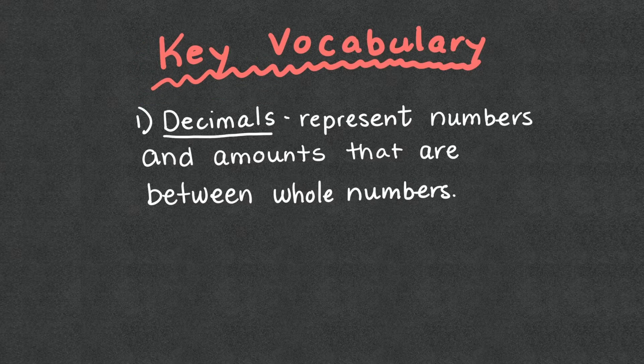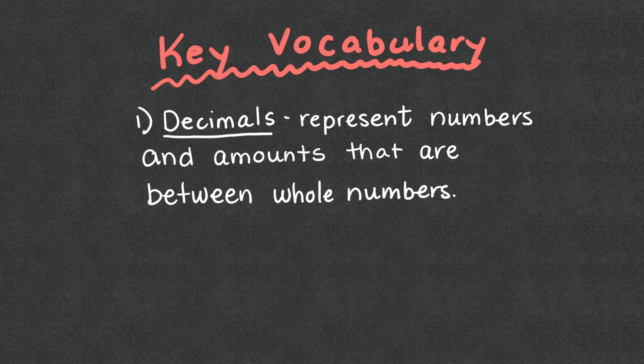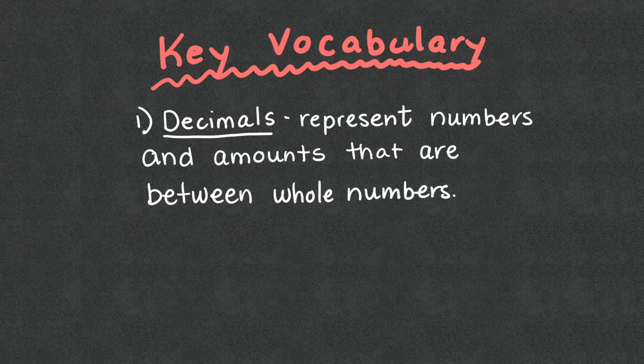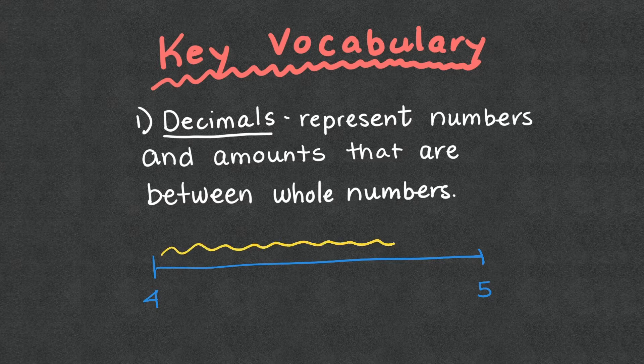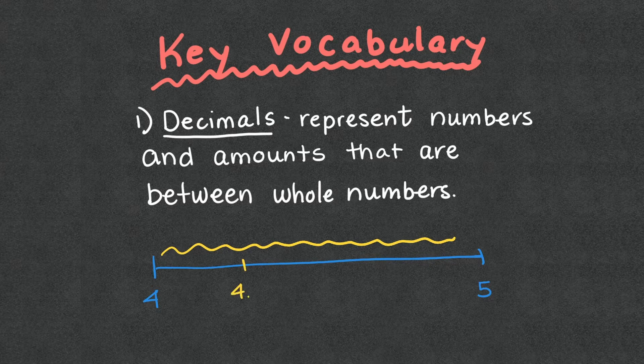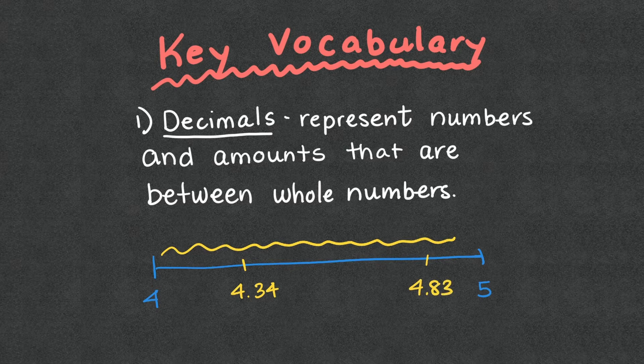First piece of vocabulary is the word decimals. So those represent numbers and amounts that are between whole numbers. So if we looked at it like a number line and we had the number four here and the number five over here, any one of these inside represents a decimal value. Same thing with fractions, that could be four and 34 hundredths. Here might be four and 83 hundredths. All of these represent amounts between whole numbers.